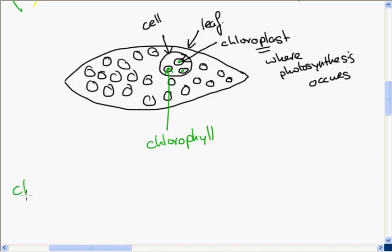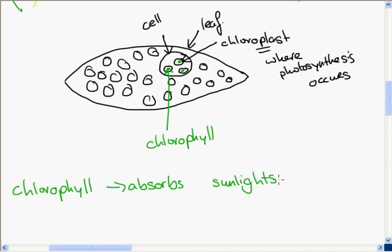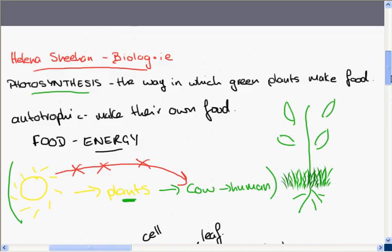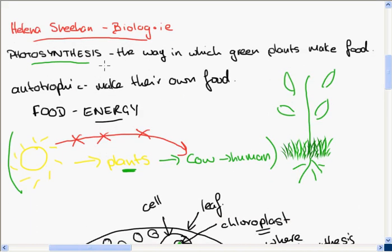Chlorophyll has the ability to absorb sunlight, and it is in this way that the plant can take the energy from the sun and combine it with a few other things. The plants need water, and they get this water from the soil. And they need carbon dioxide, which they get from the air. So the plant combines water from the soil, carbon dioxide from the air, and the sun's energy to make a food called glucose.